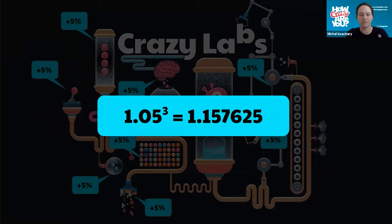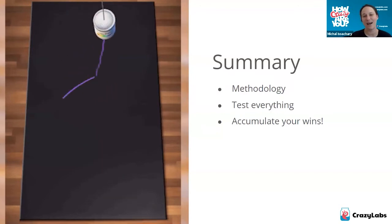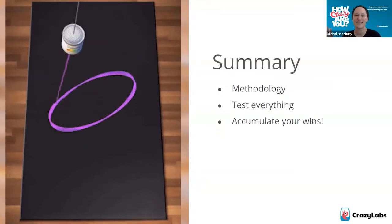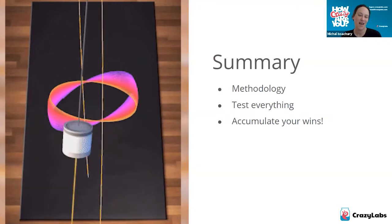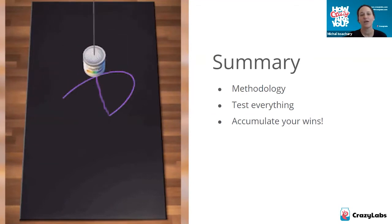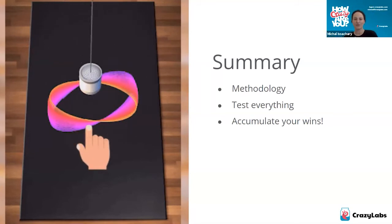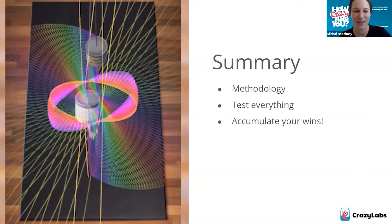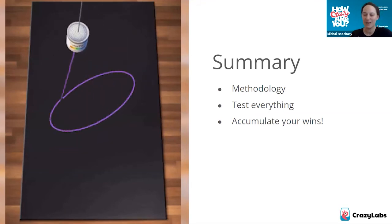So that's it for today. I want you to remember these three simple steps. One: create your data-driven method and work systematically. Two: test everything, assume nothing. Three: don't look for a single game changer — go for an accumulative increase across multiple game aspects. I hope you enjoyed this information. If you have any questions, you can contact me directly via email.